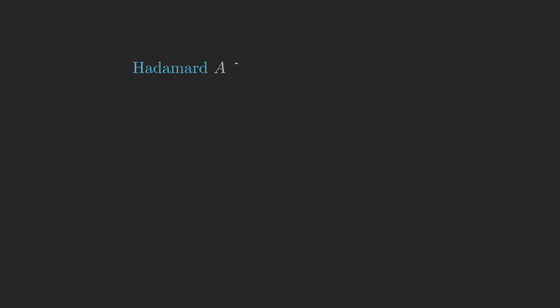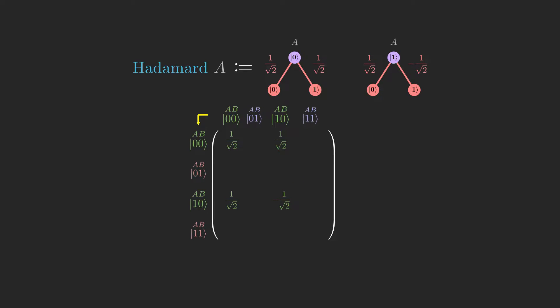Suppose we have two qubits A and B, and we want to do Hadamard A. Since we are applying Hadamard to A, we can use the normal definition for Hadamard to fill in transition amplitudes for basis state pairs where B doesn't change. Again, since we are only applying Hadamard to A, the transition amplitudes between basis states where B changes are 0.